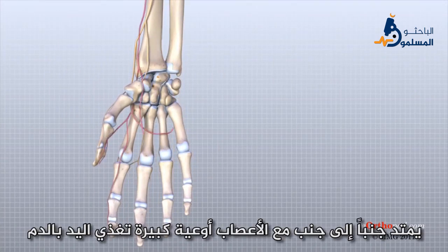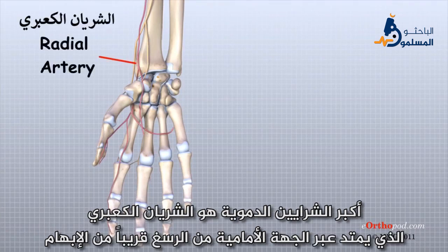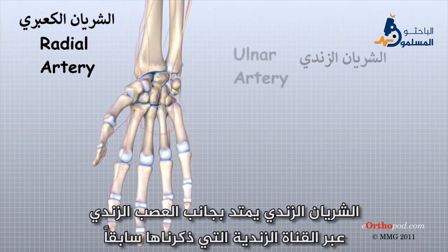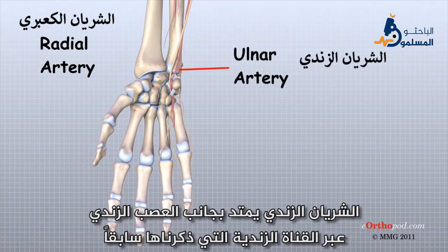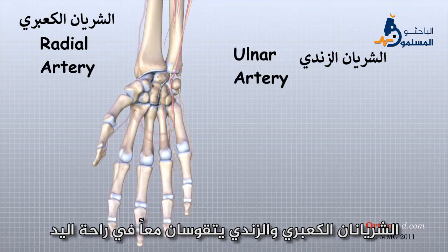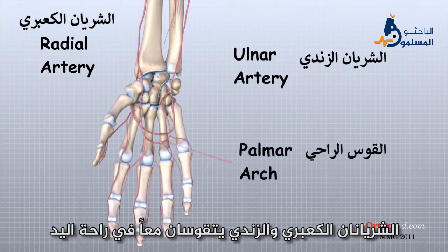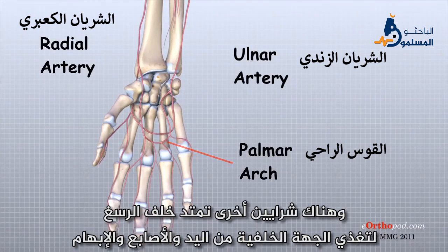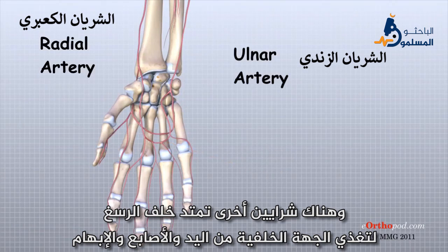Traveling along with the nerves are the large vessels that supply the hand with blood. The largest artery is the radial artery, which travels across the front of the wrist closest to the thumb — this is where the pulse is taken in the wrist. The ulnar artery runs next to the ulnar nerve through Guyon's Canal. The ulnar and radial arteries arch together within the palm of the hand, supplying the front of the hand, fingers, and thumb. Other arteries travel across the back of the wrist to supply the back of the hand, fingers, and thumb.